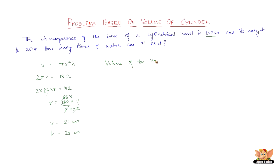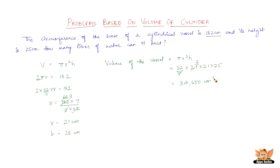The volume of the vessel is πr²h. Pi is 22/7, r is 21, so it is r squared — 21 × 21 — into 25. Solving this, we get 34,650 cm³.